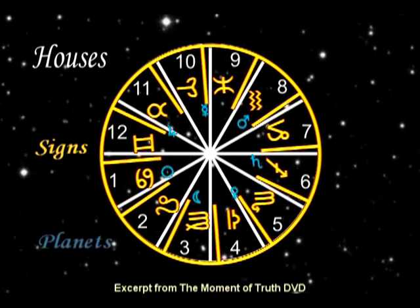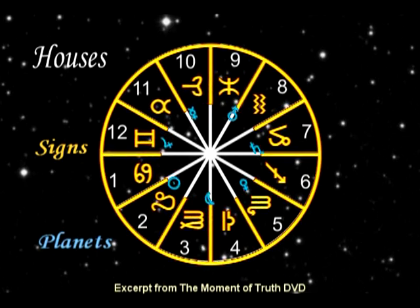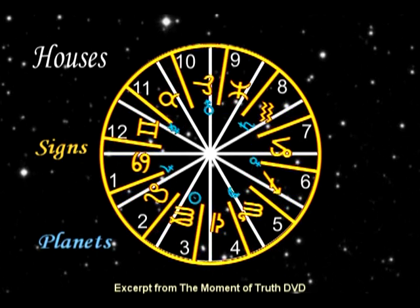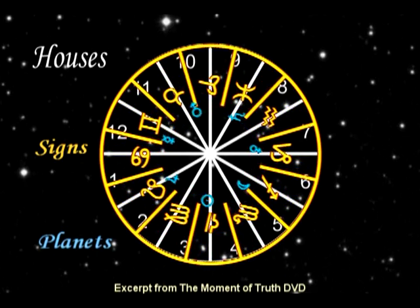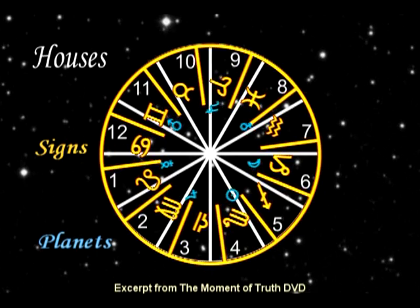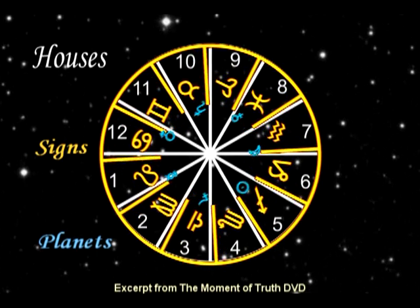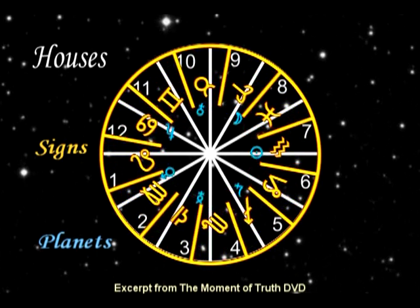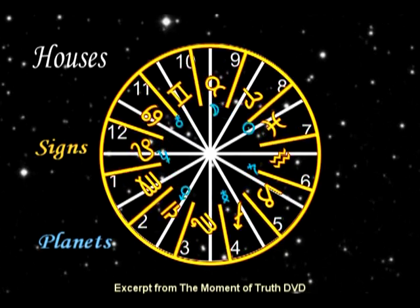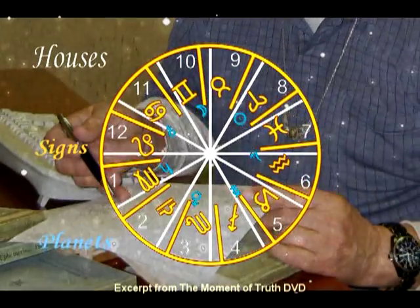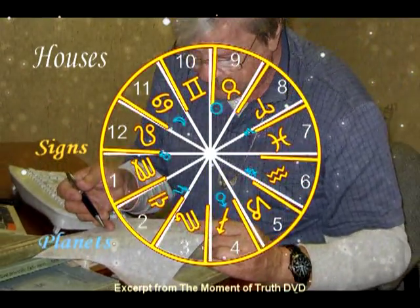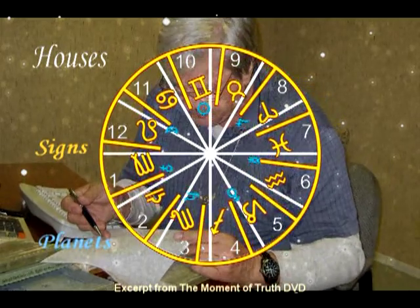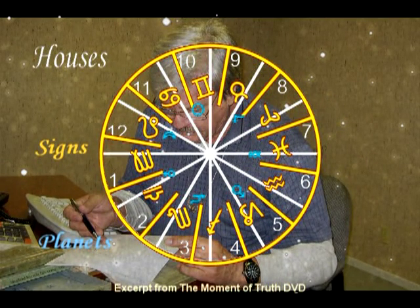Each planet is also modified, qualified, or specified as it passes through the signs. During the 24-hour rotational period of the signs, any sign or planet may be over any house at any given moment. At the time we cast a horoscope chart, the diurnal motion is frozen — and like a picture, the moment in time is frozen.